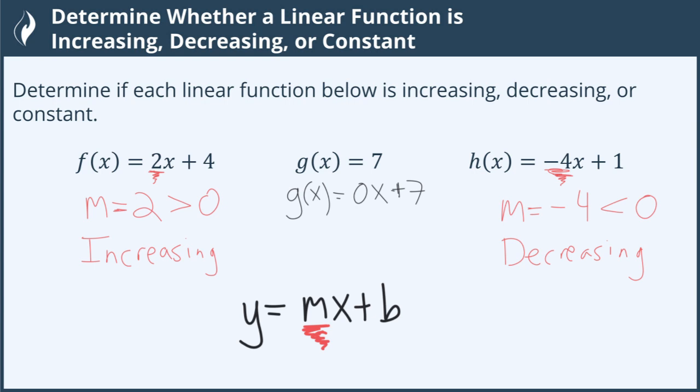That means our slope is 0. Because our slope is 0, it's not going up or down as we go across. It's staying exactly the same. It is always 7, so we say that it's constant.